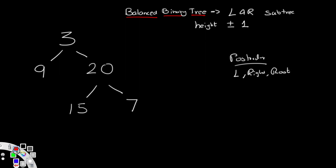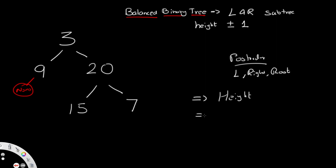Starting at the root, we go left to node 9, then left again to None. There are two things we're tracking at each node: height and whether it is balanced. Since there are two values to track, we'll use a tuple. When a node has a value of None, we output height = 0 and balanced = True.